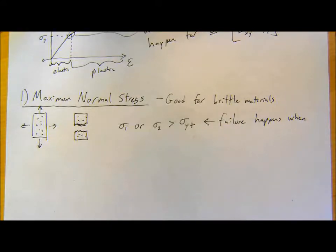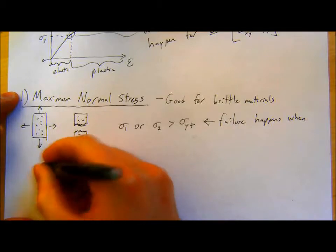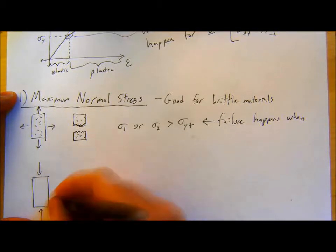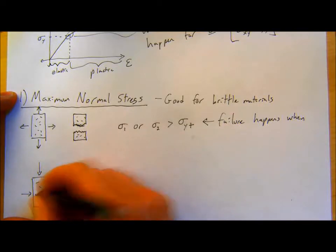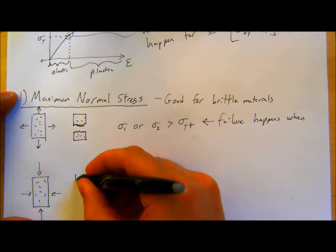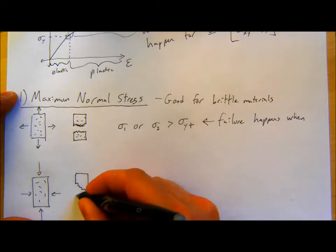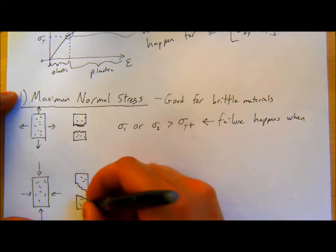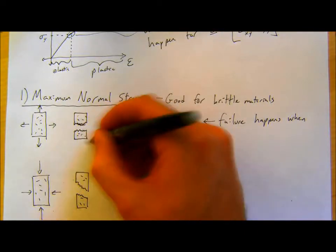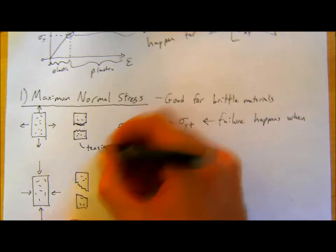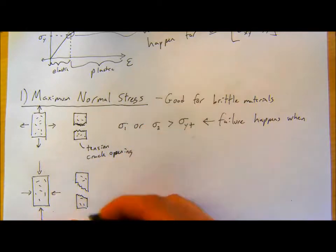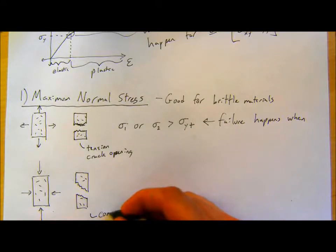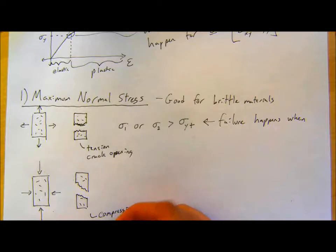In compression, there's normally a bigger failure strength, and what'll happen instead is you'll get a diagonal breaking surface. For tension, you have crack opening. For compression, you actually have a different mechanism, which is max resolved shear. It's normally the shear that starts causing failure — it's still crack opening, but it's harder for that crack to open in shear, and you end up with a higher strength.